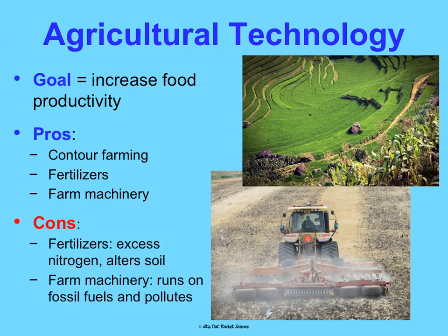The cons: fertilizers add way too much nitrogen — as we know from our geochemical cycles concept — which alters the chemistry of the soil, and that's not good. Farming machinery tends to run on fossil fuels, so we're using non-renewable resources and also creating pollution. So there are pros and cons, which you'll see with each type of technology we talk about.